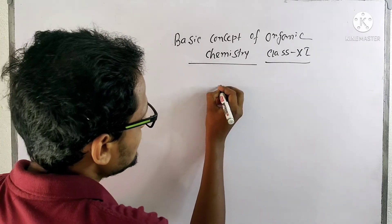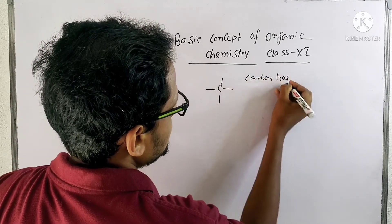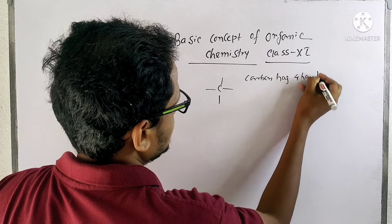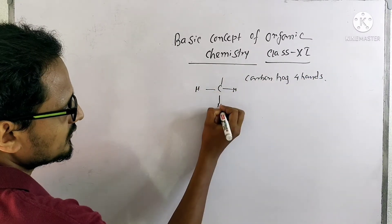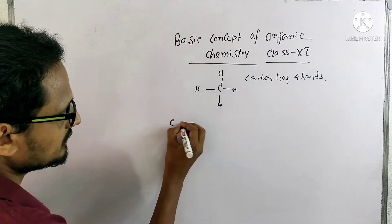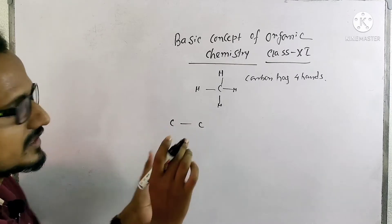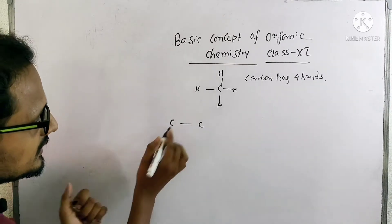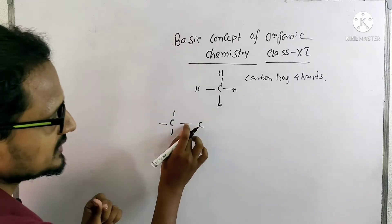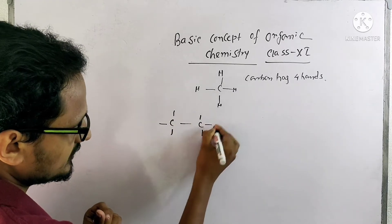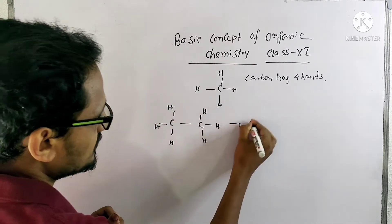I told that the valency of carbon is 4, that means carbon has 4 hands. So it will form a compound like CH4. Now a carbon-carbon single bond can be there. Here we have to fill up the valency to form a compound. This carbon has 1 bond, so we need to add another 3. This carbon also has 1 bond, so we need to add another 3. The remaining valency will be filled up by hydrogen.